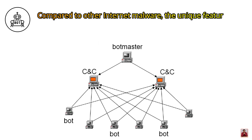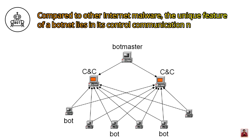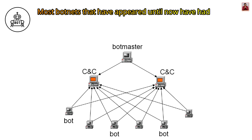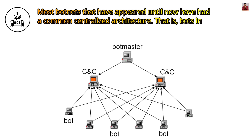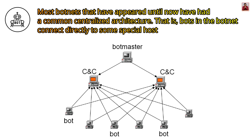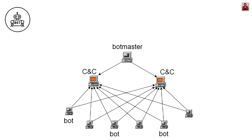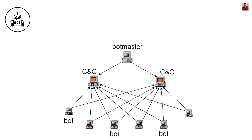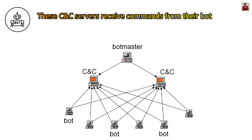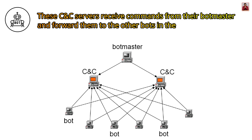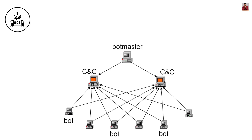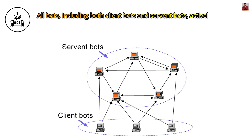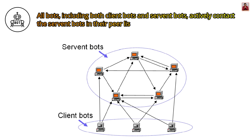Compared to other internet malware, the unique feature of a botnet lies in its control communication network. Most botnets have had a common centralized architecture, where bots connect directly to special hosts called command and control servers, or CNC servers. These CNC servers receive commands from their botmaster and forward them to the other bots in the network.